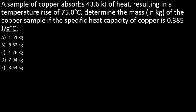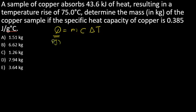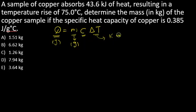The equation we'll be using is Q = mcΔT. Q is the energy transferred and must be in Joules. M is the mass and must be in grams. C is the specific heat capacity, and ΔT must be in Kelvin or Celsius.